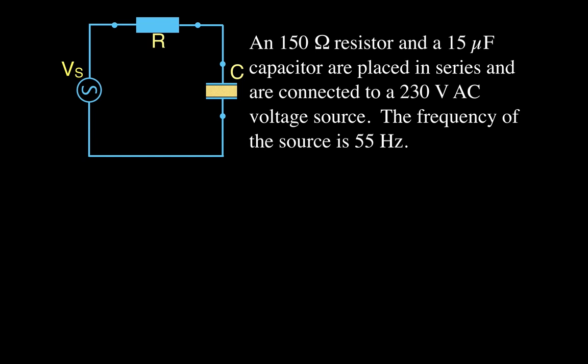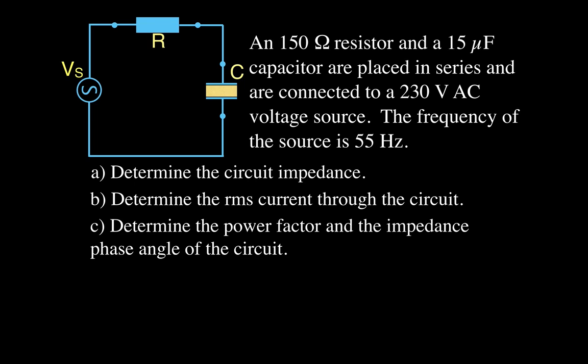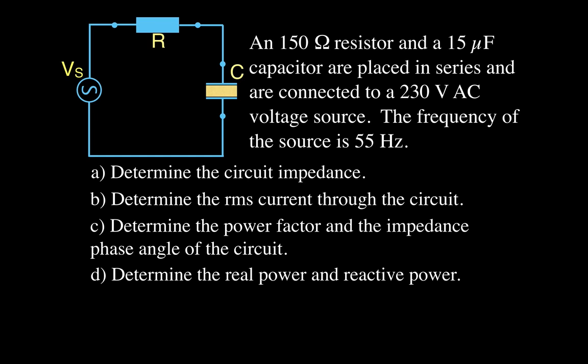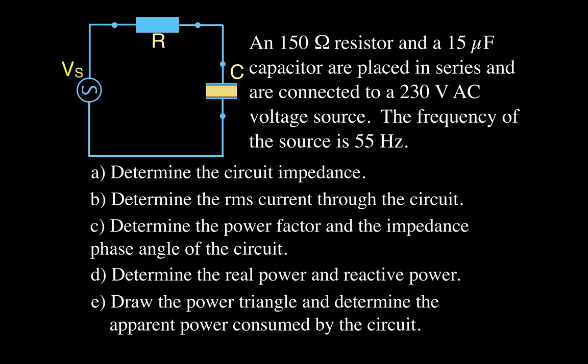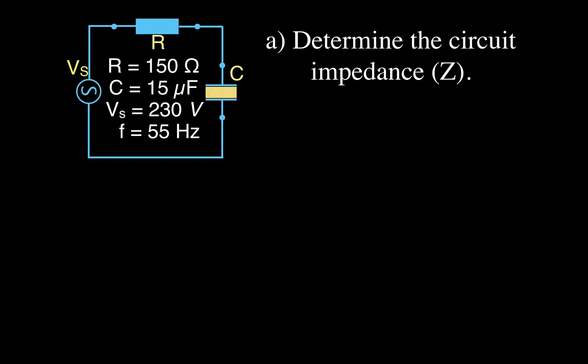We're going to do the following five things: determine the circuit impedance, determine the RMS current through the circuit, determine the power factor and the impedance phase angle, determine the real power and reactive power, and draw the power triangle and determine the apparent power consumed by the circuit.